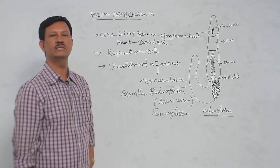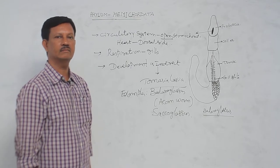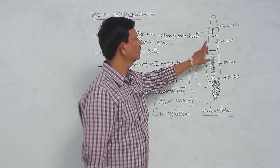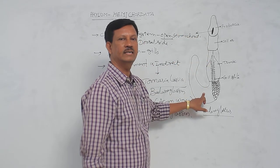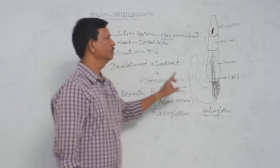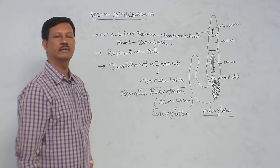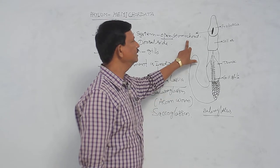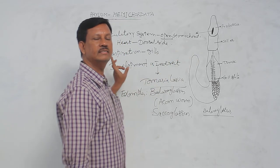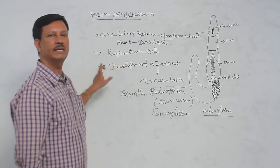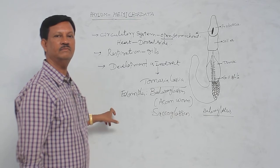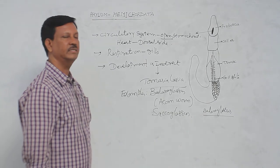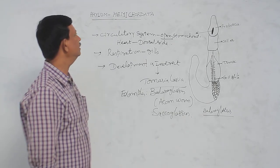Hemichordata means half chordates. They are found in marine water. Body is divided into proboscis, collar, and trunk region. They resemble worms. Due to the doubtful nature of the stomochord, they are included in the non-chordata. Circulatory system is the open type, respiration is by gills, and in the life history, tornaria larva is present. These are the special characteristics of the hemichordata.